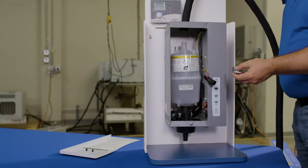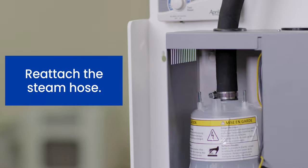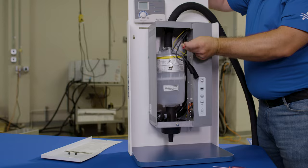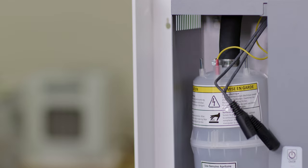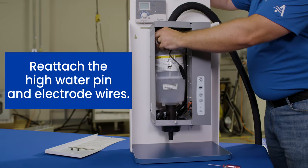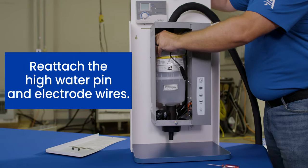Slip the steam hose over the top of the canister and tighten the hose clamp. Reattach the high water pin to the front pin and then reattach the two electrode wires. Again, it doesn't matter which one goes where, just attach them and push them all the way down so that they're nice and secure.